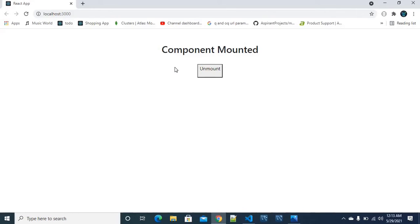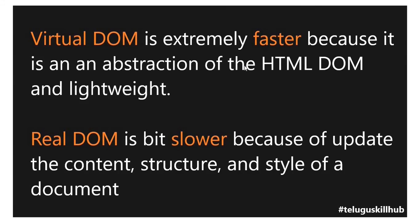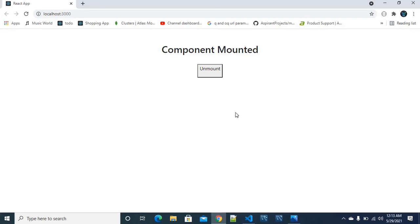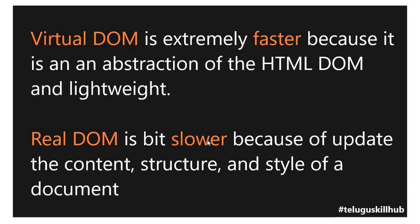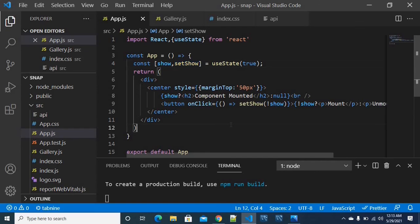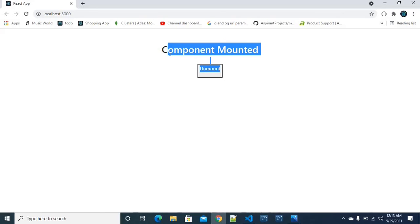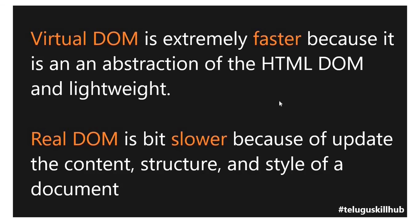The Real DOM is the actual output rendered in the browser. Updating the Real DOM takes more time because it involves updating the content, structure, and styling of the document. So the faster one is the Virtual DOM.